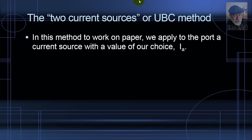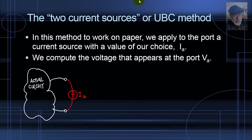In this method, we work on paper, not in the lab. We apply to the port of interest a current source with the value of our choice I_A. When we do that, of course, a voltage will appear at that port. Let me call that voltage V_A. That's going to be a number from a voltmeter. In reality, on paper, a value that we compute with MNA. If that circuit is truly equivalent to this one, when we connect that current source to the equivalent one, the same voltage V_A that I have obtained with MNA from the circuit on the left must appear.